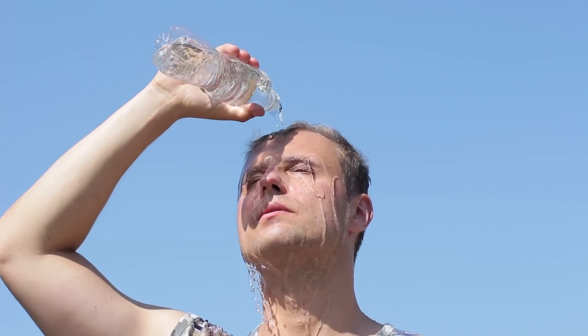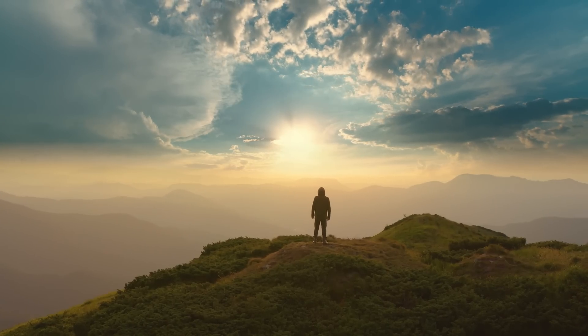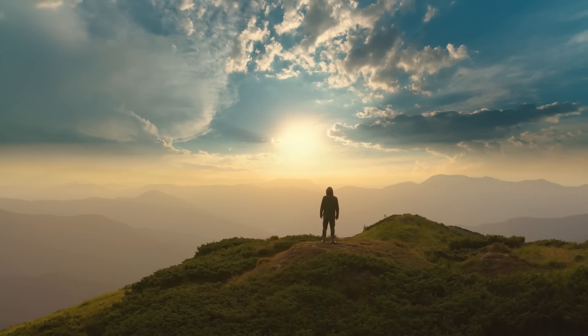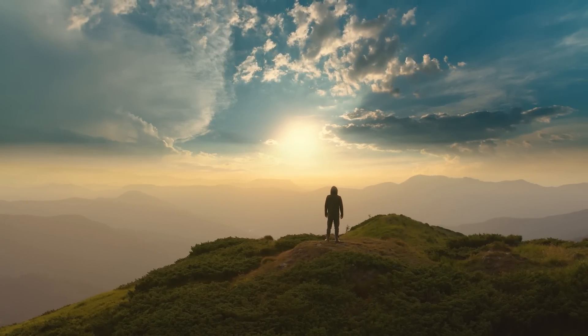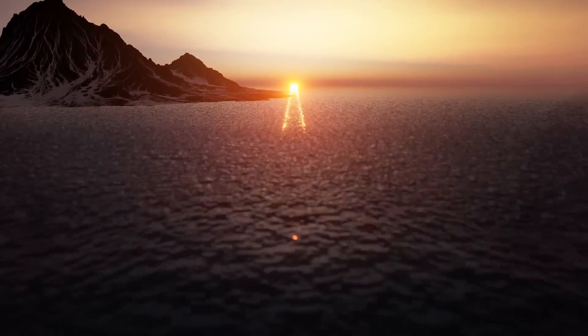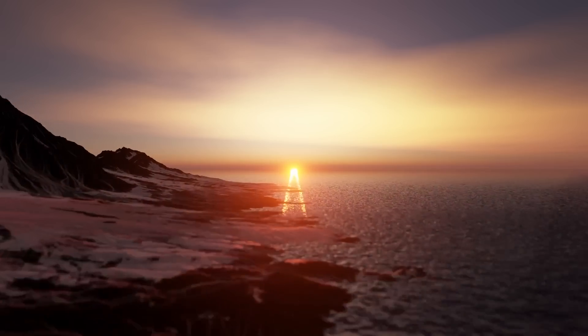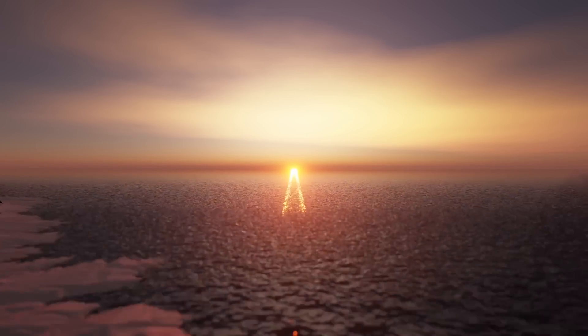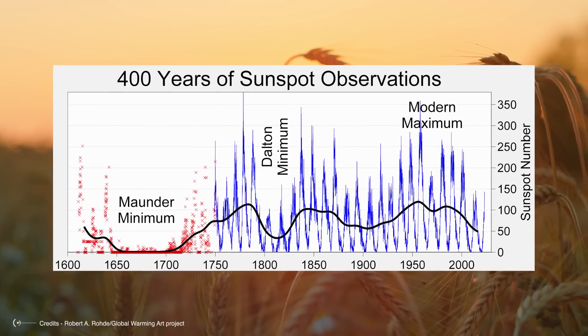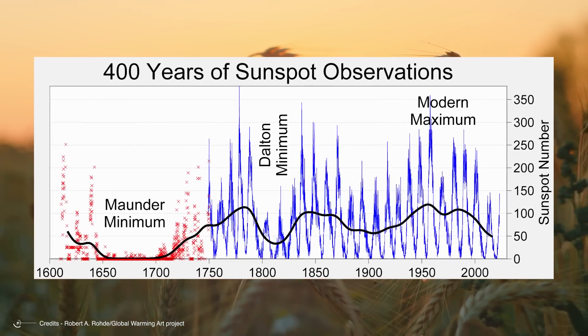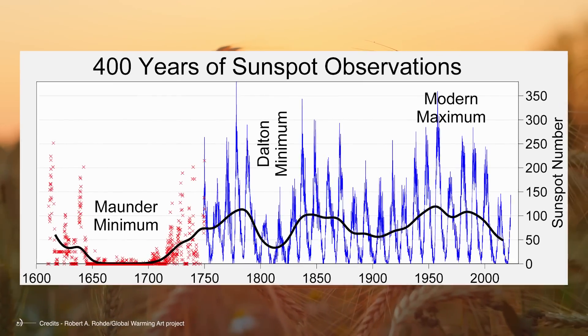Variations in solar activity can influence Earth's climate in several ways. However, the direct impact of variations in solar radiation on global temperatures is relatively small compared to other factors, such as greenhouse gas emissions. Changes in solar activity can affect climate on longer timescales and more indirectly. A significant historical example is the Maunder Minimum, approximately 1645 to 1715, a period of deficient solar activity with very few sunspots.